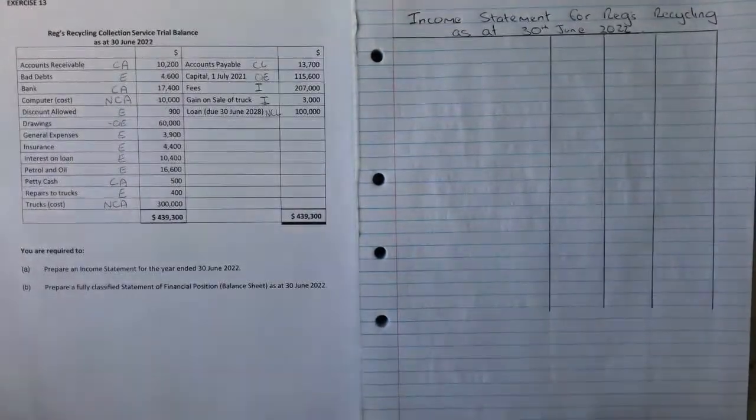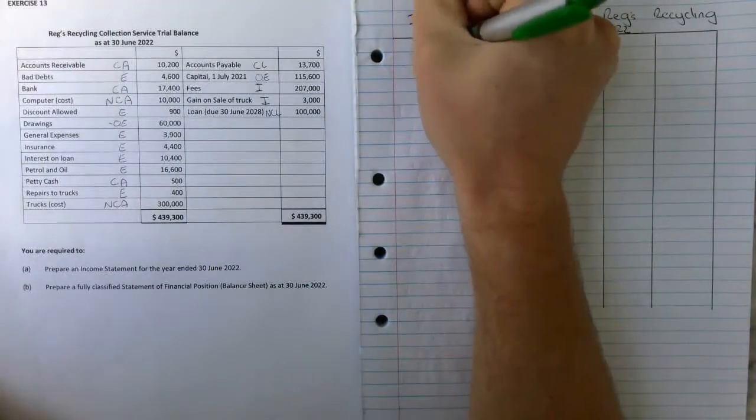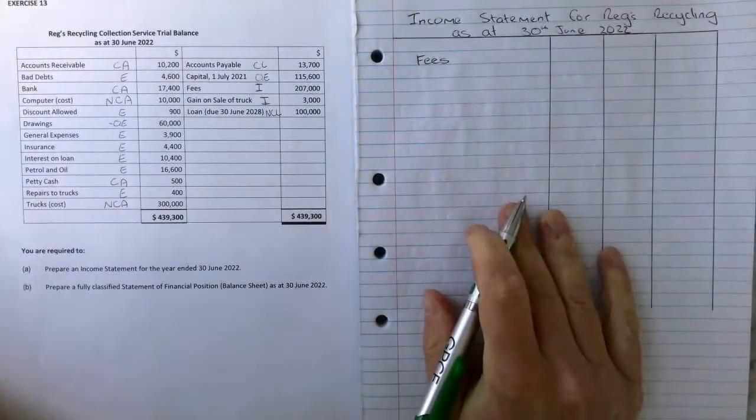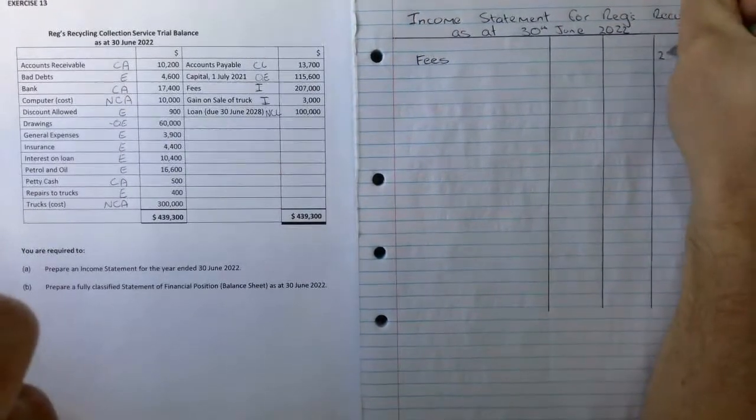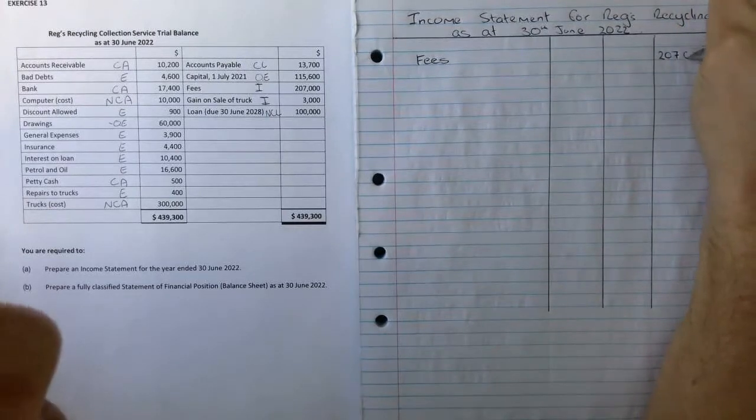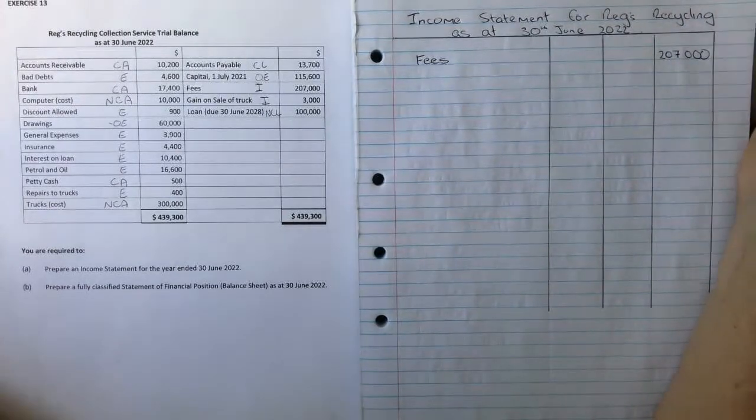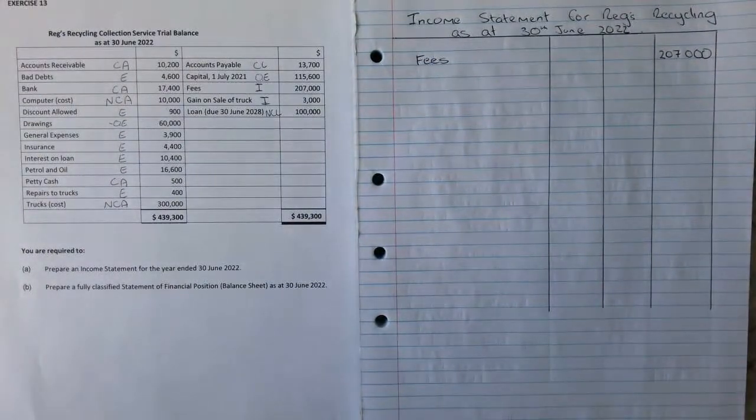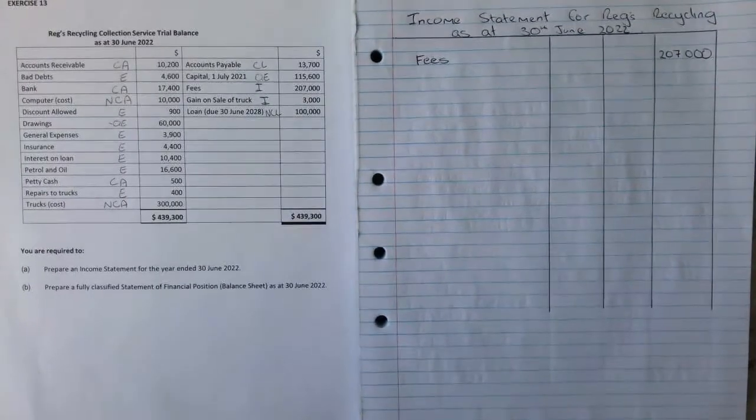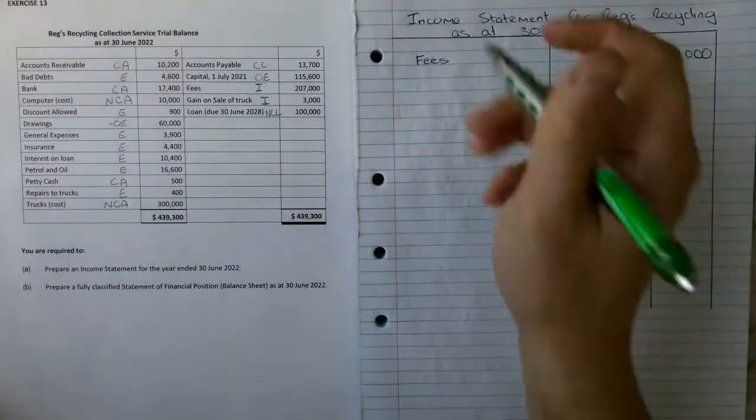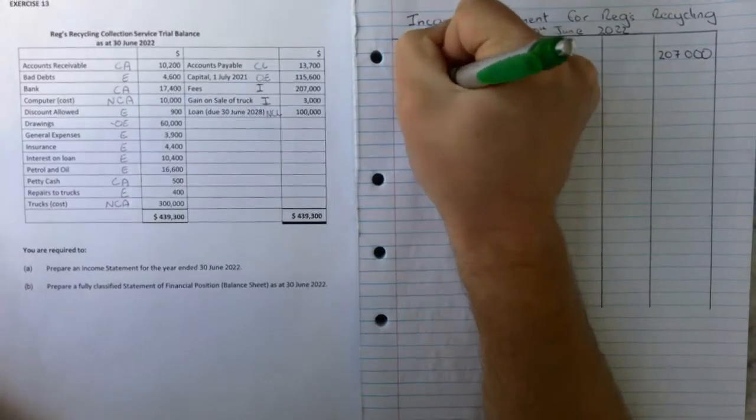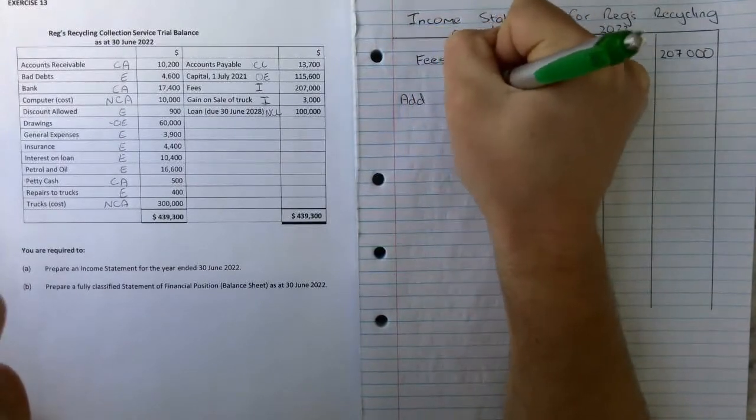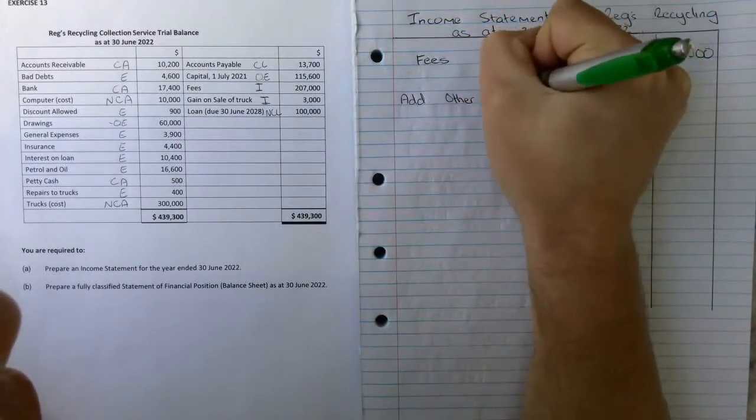This one's a bit different to our income statement last time because it's not sales, it's going to be fees at the top and that's going to be $207,000. As we can see there's actually no cost of goods sold, so our fees are just going to stay there. We're going to add our other income.